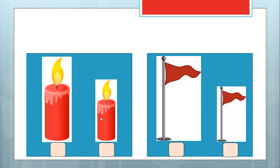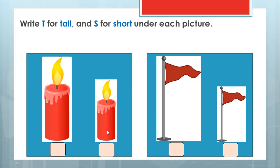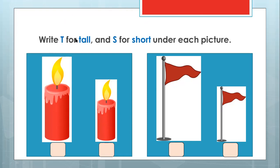Can you see the candles? There are two candles here, and they are burning. What color is the candle? They are both red, and the fire is yellow. One candle is bigger and taller, and another candle is smaller and shorter. Write letter T for tall and S for short. This candle is tall, so let's write letter T. And the short one gets letter S. Good job.